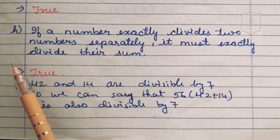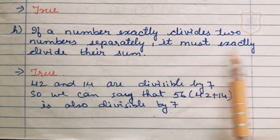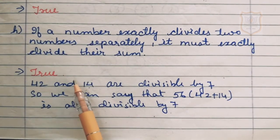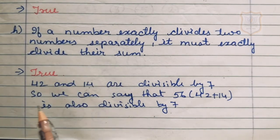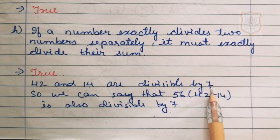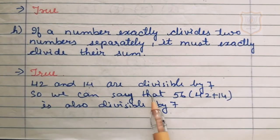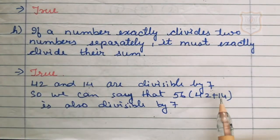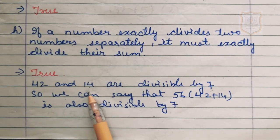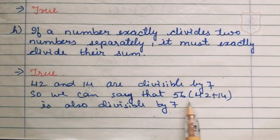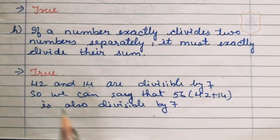Part H of question number 1: if a number exactly divides two numbers separately, it must exactly divide their sum. The statement is true. For example, 42 and 14 are both divisible by 7. If we add 42 and 14, we get 56, and 56 is also divisible by 7. So the statement is true.